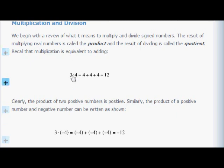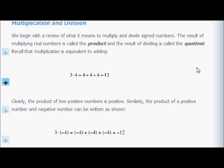Here we have multiplying numbers. You have 3 times 4 — the dot means you're multiplying. The result, 12, is called the product. Now if you were dividing, say 3 divided by 4, which is 0.75, that would be called the quotient. The result of dividing is called the quotient.